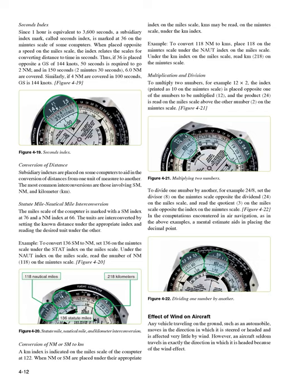Conversion of distance: subsidiary indexes aid in the conversion of distances from one unit of measure to another. The most common interconversions involve statute miles (sm), nautical miles (nm), and kilometers (km). Statute mile/nautical mile interconversion: the miles scale is marked with a sm index at 76 and a nm index at 66. To convert 136 sm to nm, set 136 on the minute scale under the stat index on the mile scale. Under the naut index on the mile scale, read 118 on the minute scale. Figure 4-20.